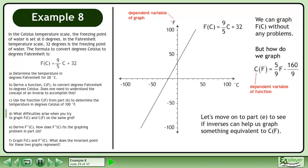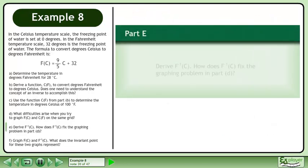Let's move on to Part E to see if inverses can help us graph something equivalent to c of f. In Part E, we'll derive f inverse of c. How does f inverse of c fix the graphing problem in Part D?